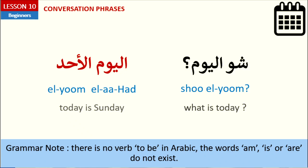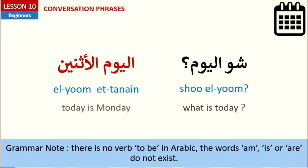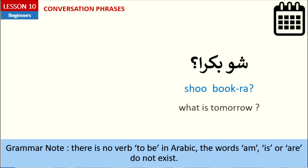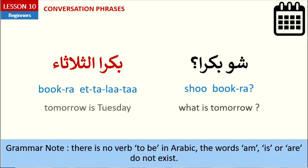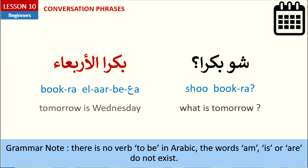Yesterday — مبارح. Now let's use these words in a sentence. For example: 'What is today?' Today is Sunday. 'What is today?' Today is Monday. 'What is tomorrow?' Tomorrow is Tuesday. 'What is tomorrow?' Tomorrow is Wednesday.